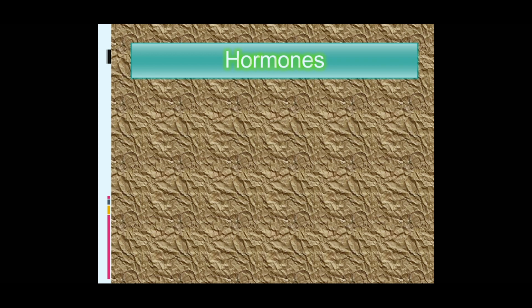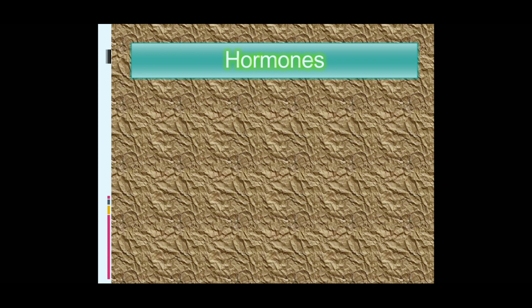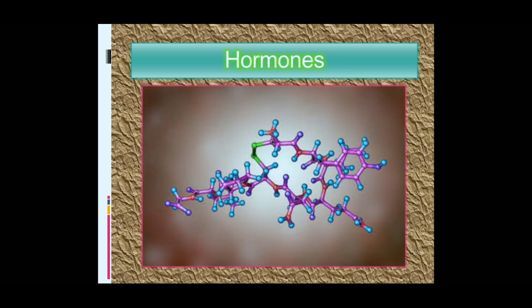Now let's see some features related to hormones. Hormones are chemical substances acting as messengers which help to connect various organs. As a result, the functions of the body can be carried out in a normal way — this is what we call homeostasis — which is maintained with the help of hormones.